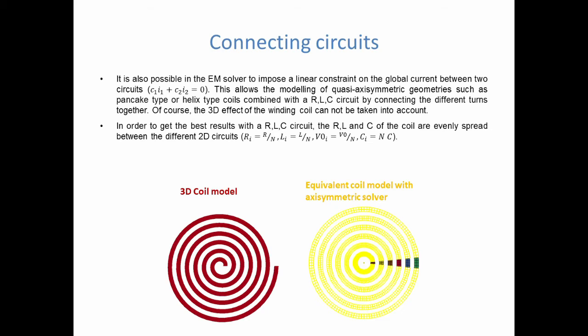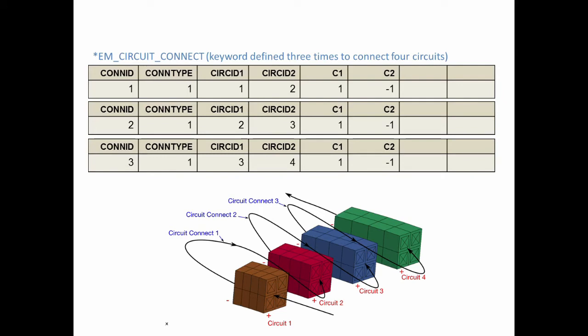So, again, in summary, for the coil, once the user has defined a circuit and a 2D axi part for each winding and associated to each part a portion of the RLC circuit values, he can then connect those circuits together by using the keyword EM_CIRCUIT_CONNECT. In the example below, he will, for example, have 4 circuits, because he's got four windings, and will therefore need to define the EM_CIRCUIT_CONNECT keyword three times, thus connecting all those circuits together. So, this is how you set up your coil and RLC circuit with the EM axisymmetric solver.